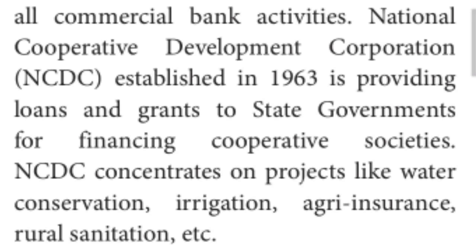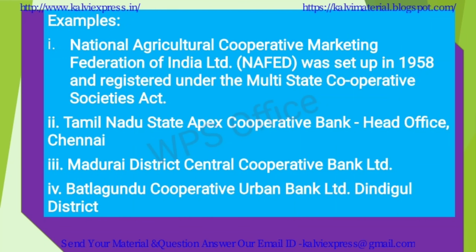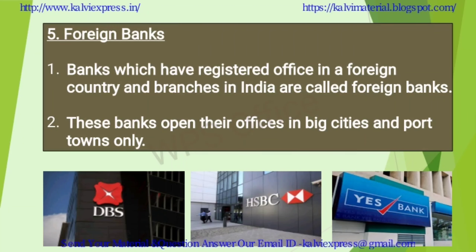The NCDC — National Cooperative Development Corporation — established in 1963, provides loans and grants to state governments financing cooperative societies. The projects it invests in include water conservation, irrigation, agricultural insurance, and rural sanitation. Examples include the Tamil Nadu State Apex Cooperative Bank, with its head office in Chennai, and the Madurai District Central Cooperative Bank Limited.